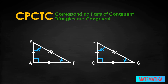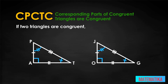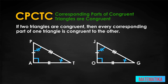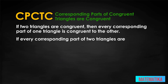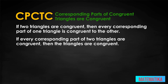Every part of one triangle is congruent to every matching or corresponding part of the other triangle. CPCTC reminds us that if two triangles are congruent, then every corresponding part of one triangle is congruent to the other. The converse is that if every corresponding part of two triangles are congruent, then the triangles are congruent.